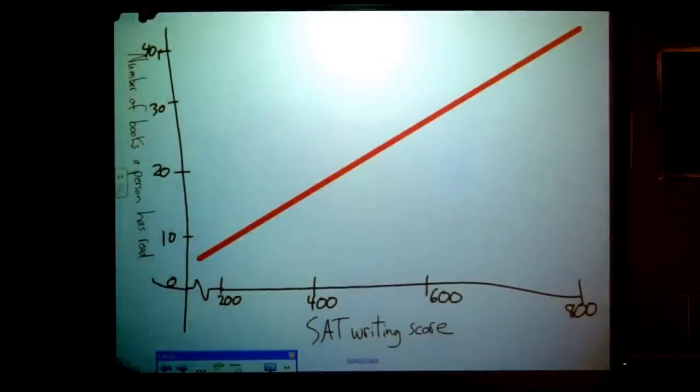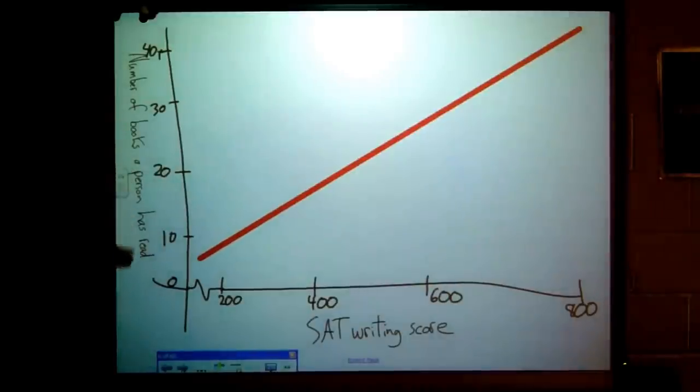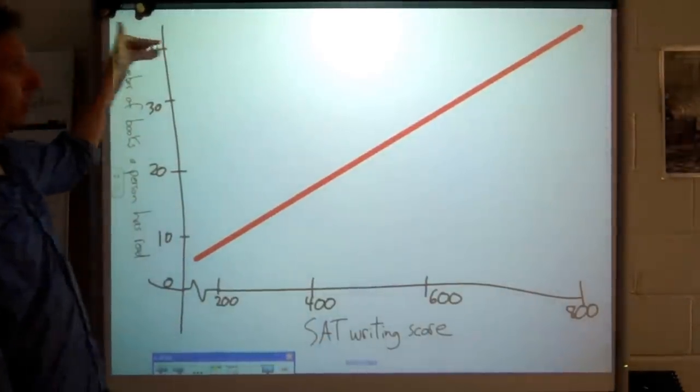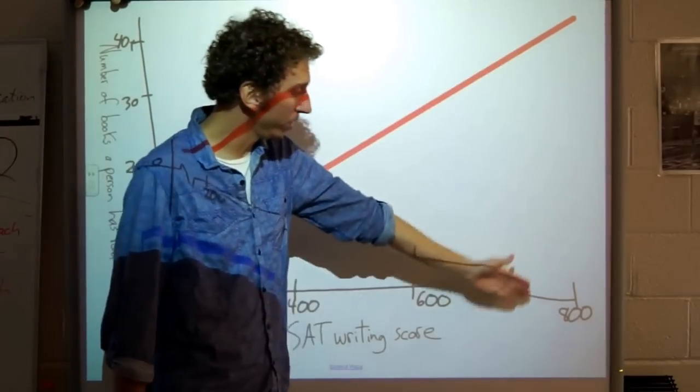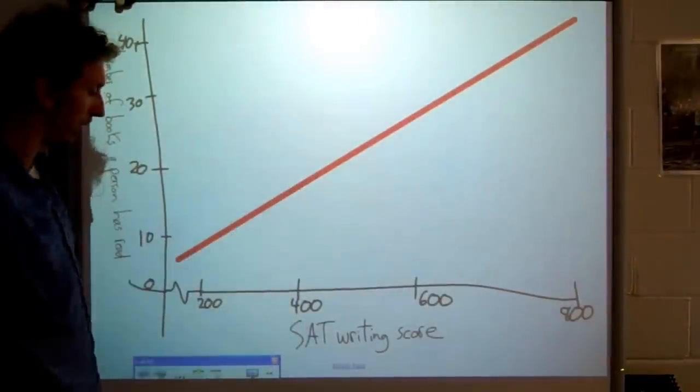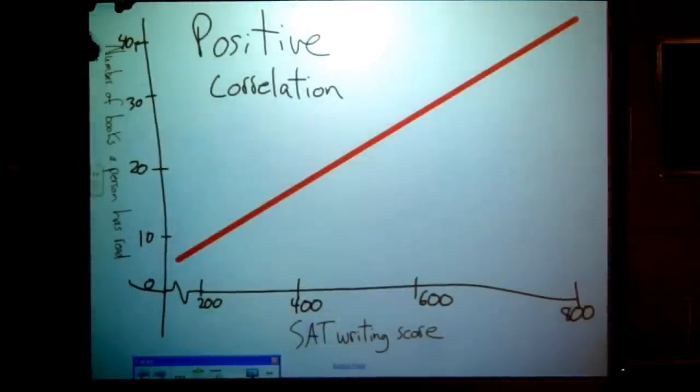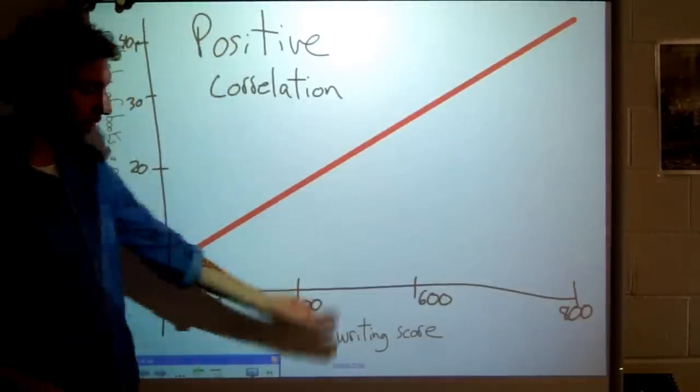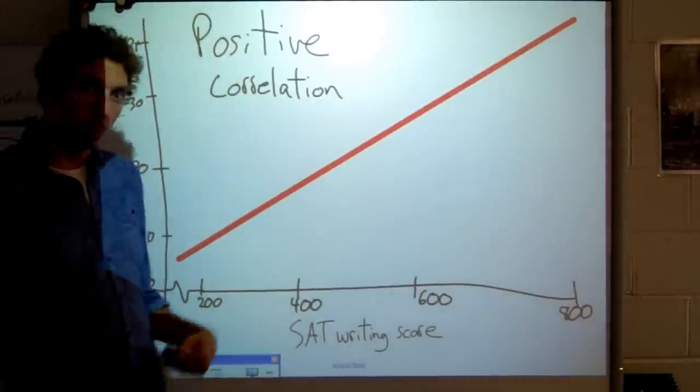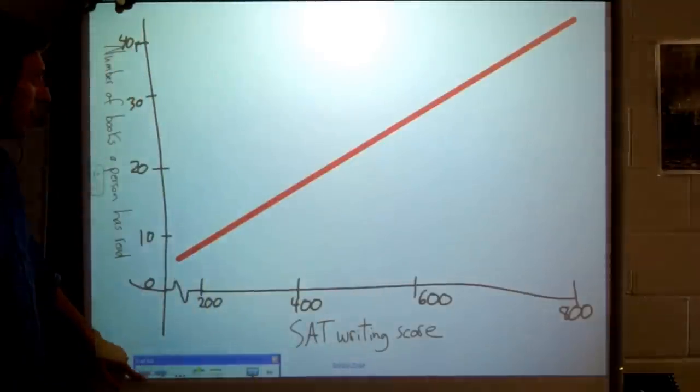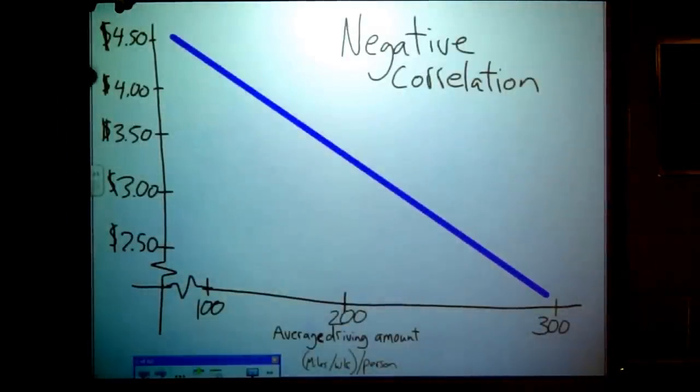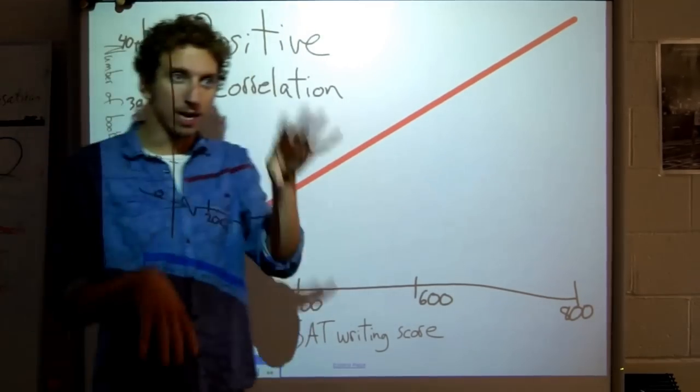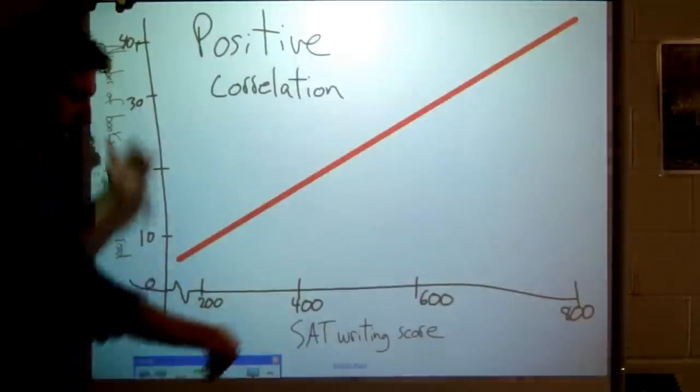This, though, would be the opposite. This is another correlation. Let's say there's a correlation between the number of books that a person has read in their lifetime and how well they do on the SAT writing portion. If someone read 40 books in their lifetime, they would match up with somewhere around a perfect score. This is called a positive correlation. That's when one set of data increases and the other set of data also increases. The more books you read, the better your score will be. The more, the better is a positive correlation. And the more, the less is a negative correlation.